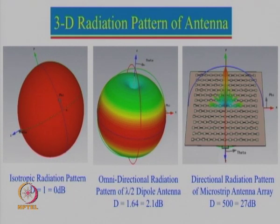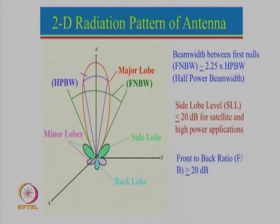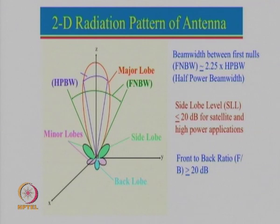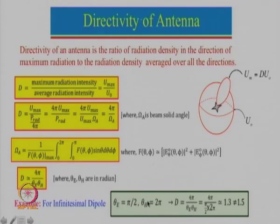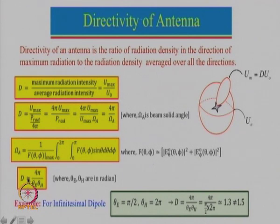Then we looked at the 2D radiation pattern, we defined major lobe, half power beam width, personal beam width, and various side lobe levels. Then we defined the directivity definition — what is the directivity — and looked into the very simple expression for directivity from half power beam width and how we can calculate it.